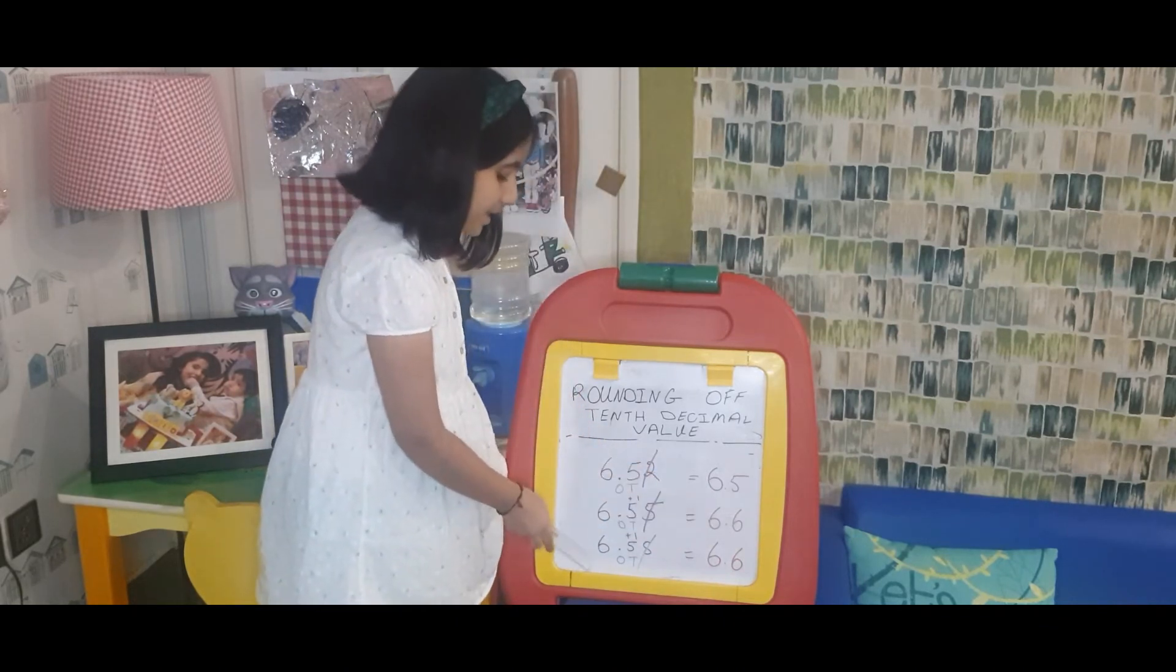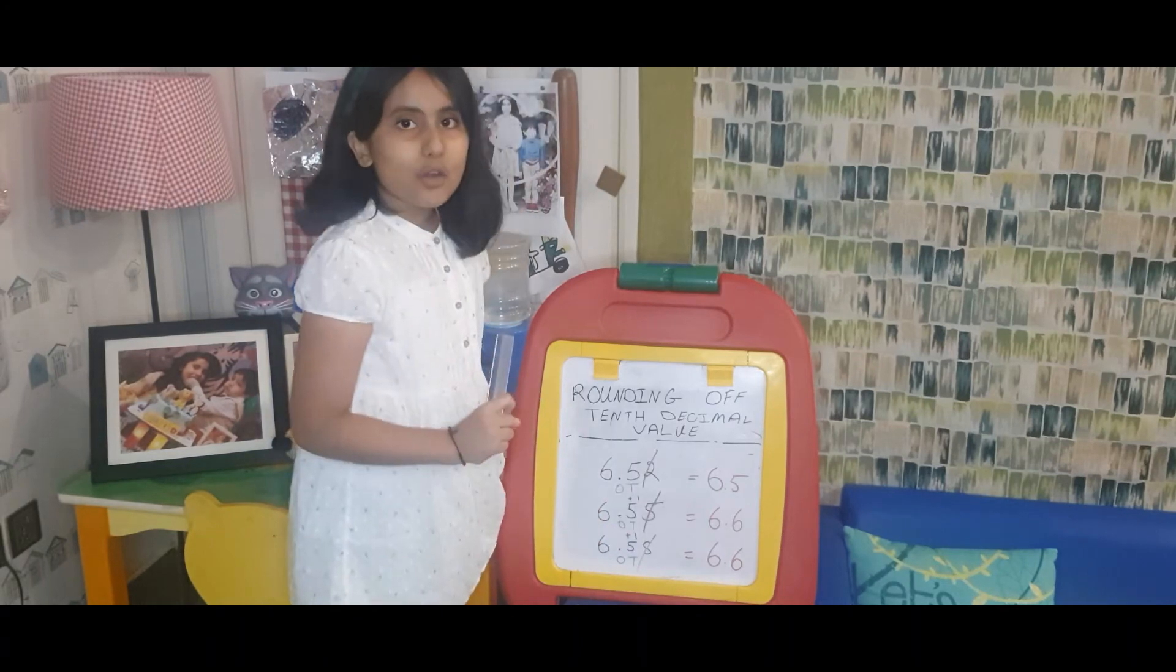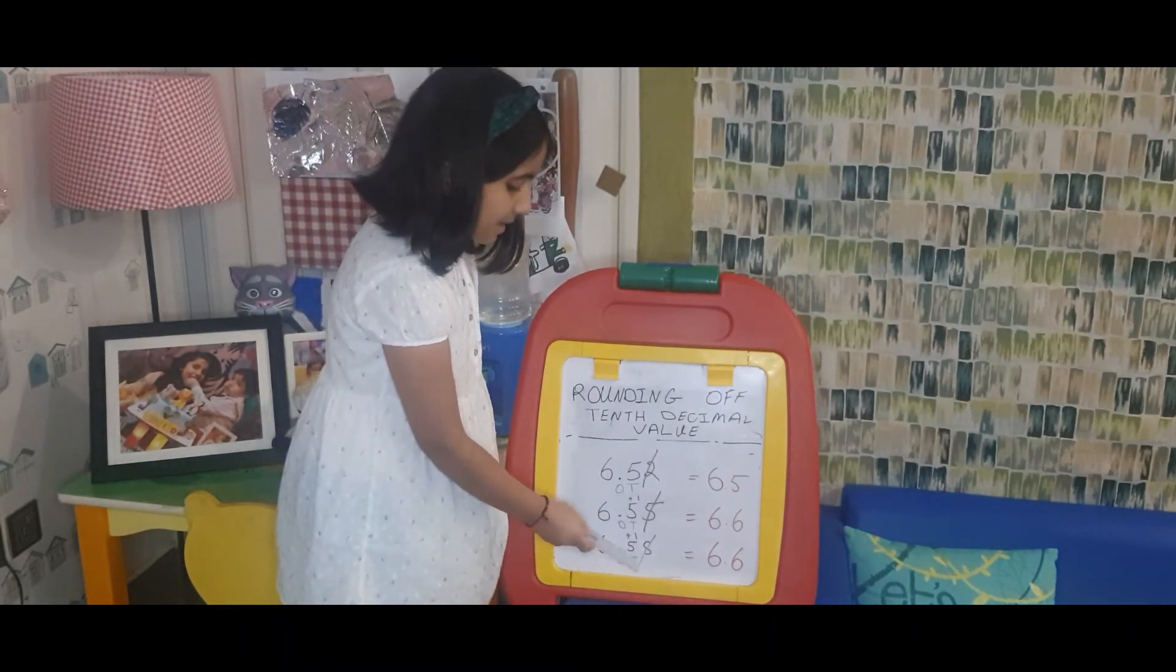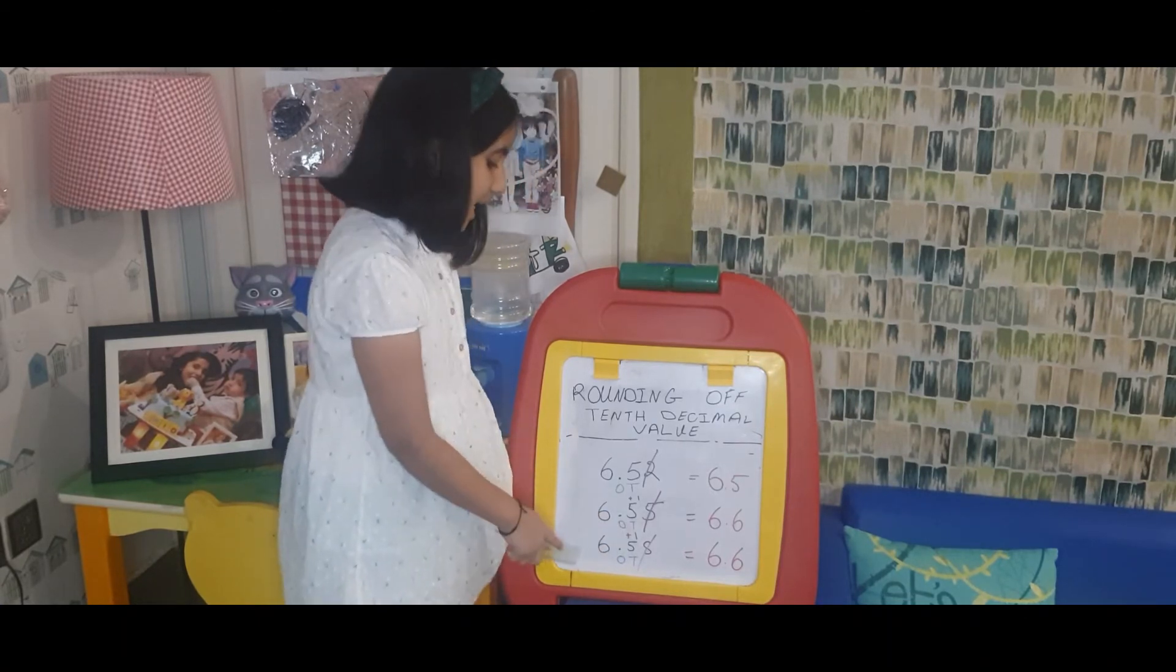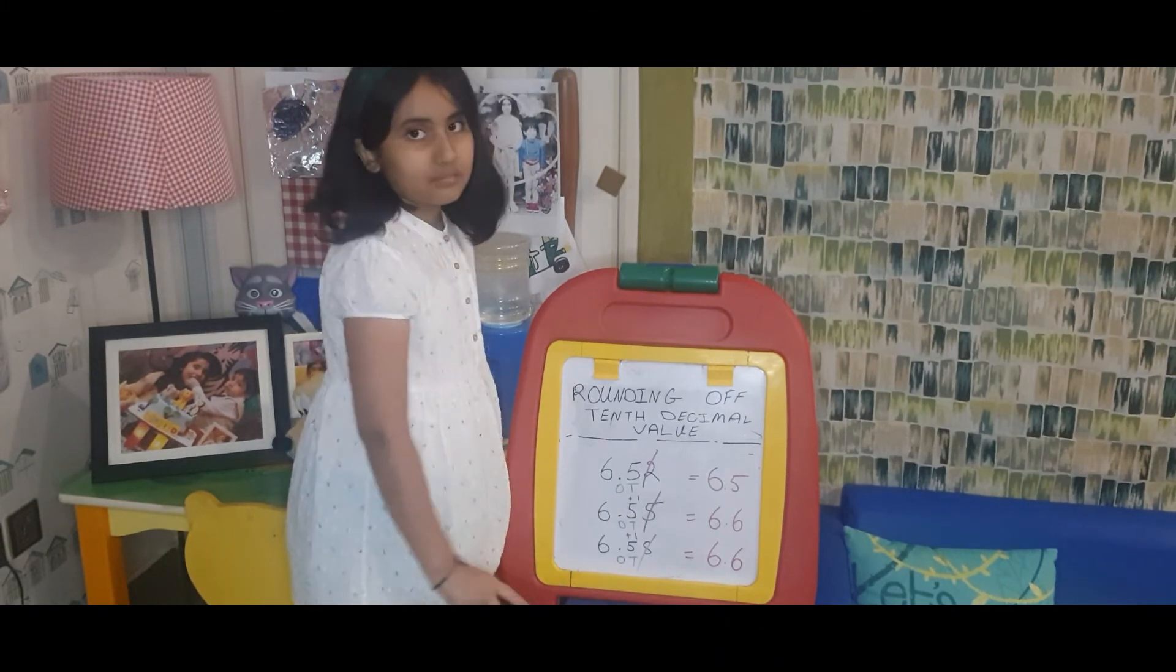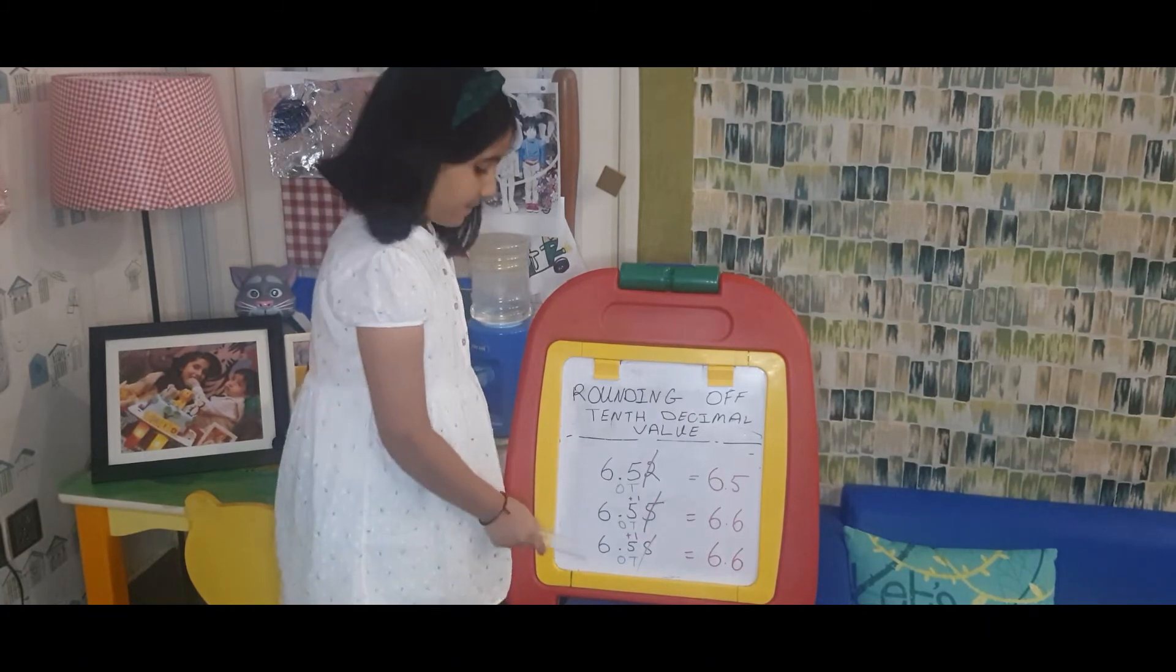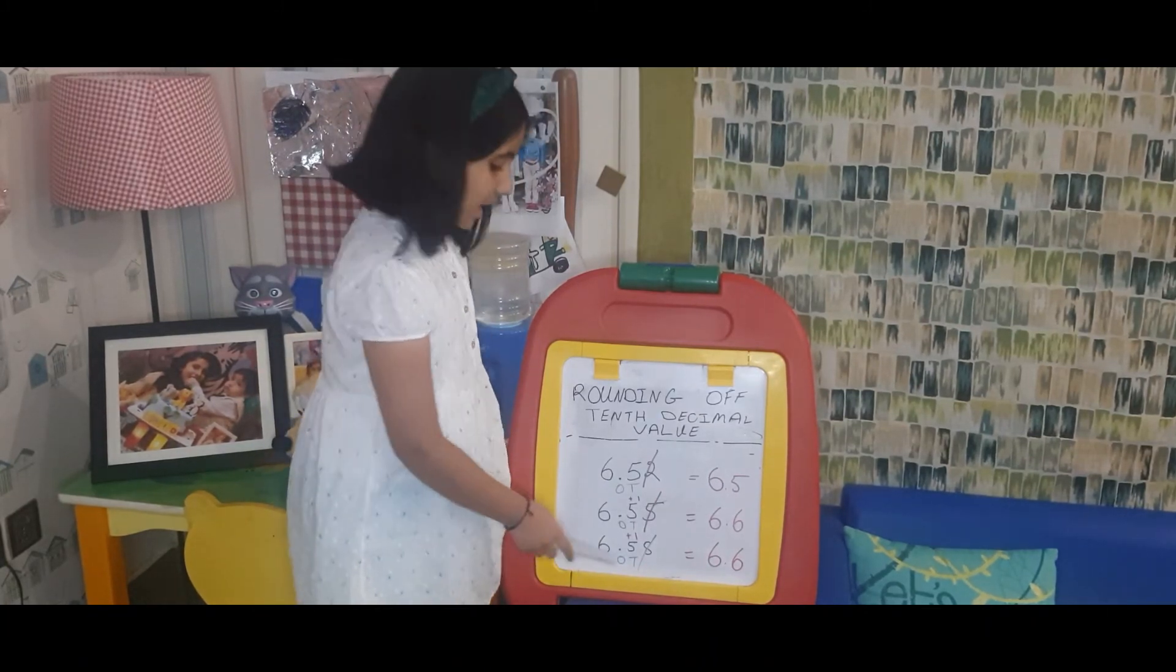Now we'll go to the last number, which is 6.58. We will consider this decimal as one and write 'O' down here. Then the digit to the right of one is ten, so I will write 'T' under the 5.